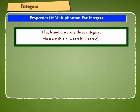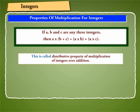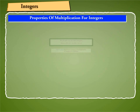Hence, if A, B, and C are any three integers, then A into (B plus C) is equal to A into B plus A into C. This is called the distributive property of multiplication of integers over addition.